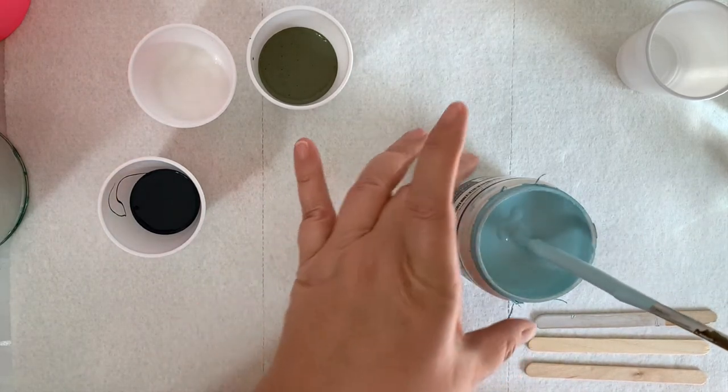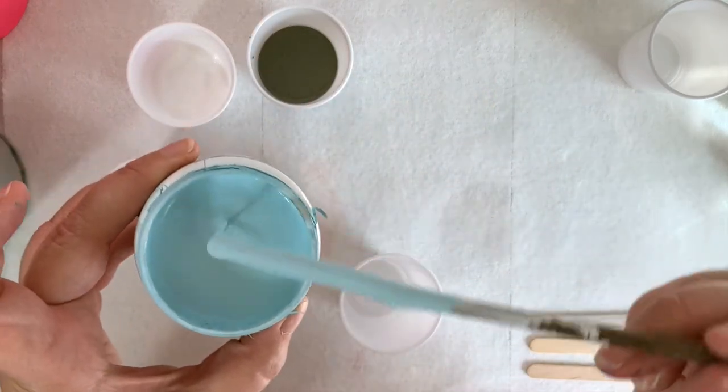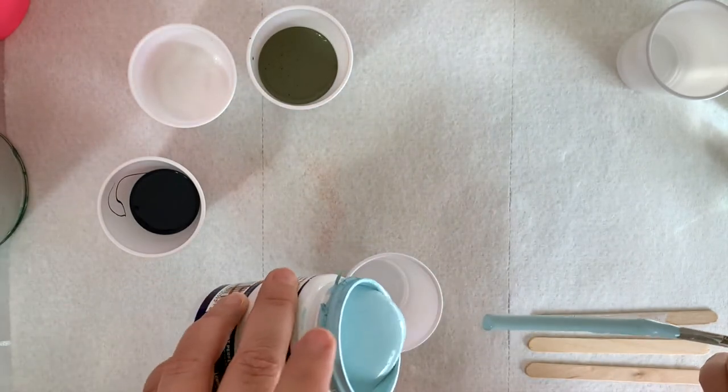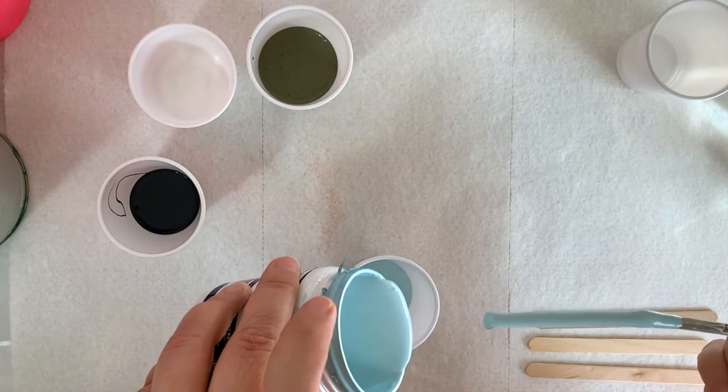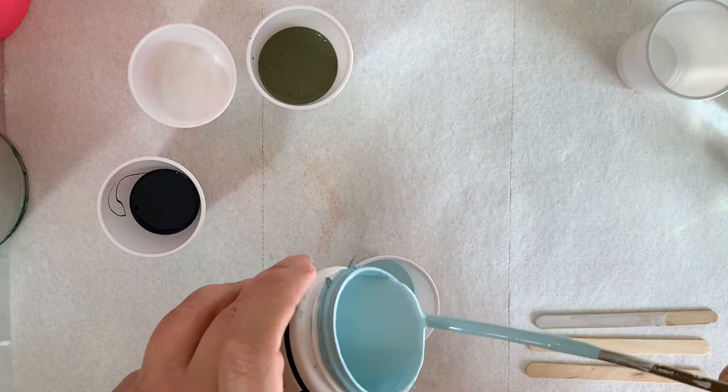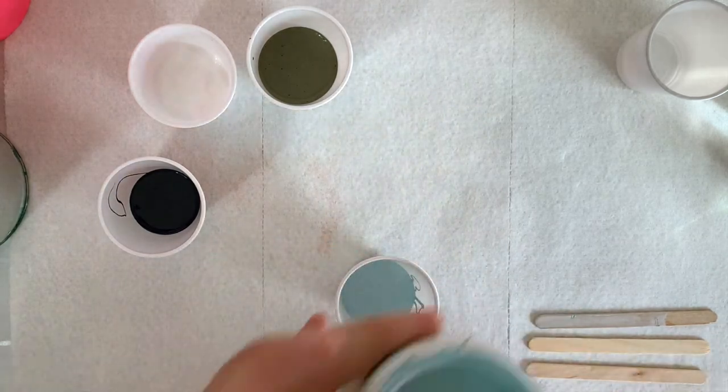So right now I'm just mixing the paint with water. You'll see one of my stir sticks is actually just a branch from outside. I do like to take branches and other things and use them to stir paint. They work just fine. Just clean them off, let them dry, and they're great.